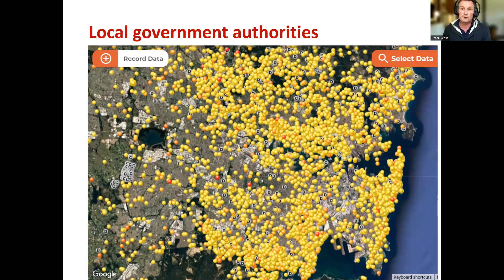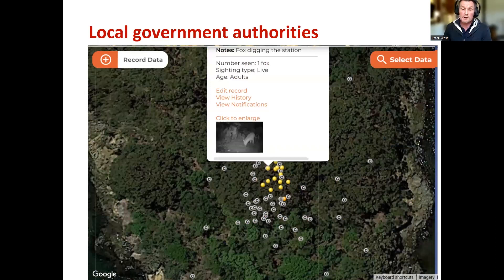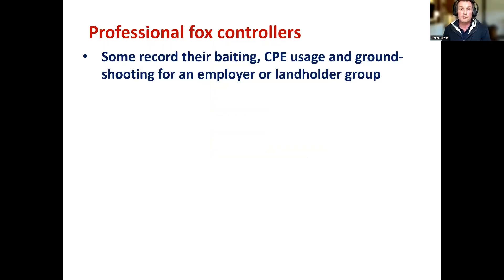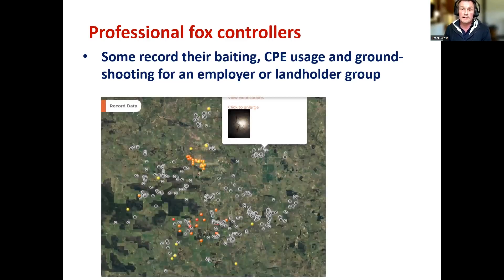In these locations, local government groups sometimes try to help people with targeted control programs or run education programs, because foxes are very abundant across metropolitan areas of Australia. It might surprise you that in Sydney and other metropolitan areas there are cleverly designed fox control programs in some locations to protect threatened species and protect residents. Professional fox controllers record baiting, trapping, and shooting — usually for an employer or landholder group. At an undisclosed location in Western Australia, people are doing intensive control and shooting programs and using FoxScan to record that.